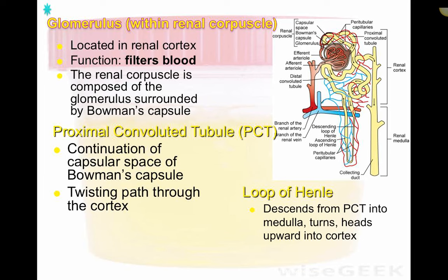The renal corpuscle refers to the general bulb-shaped area that contains the glomerulus. Within that bulb is the glomerulus itself — a network of small capillaries — surrounded by the Bowman's capsule. The glomerulus is located within the renal cortex and its function is to filter blood and create urine. The proximal convoluted tubule is a continuation of the capsular space of the Bowman's capsule and takes a twisting path through the cortex.